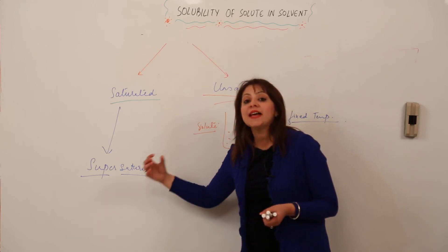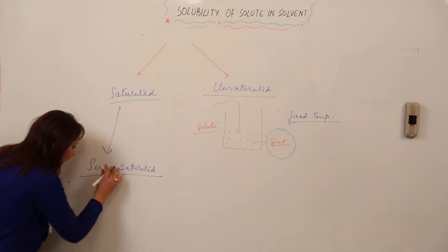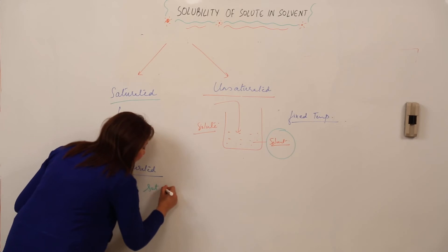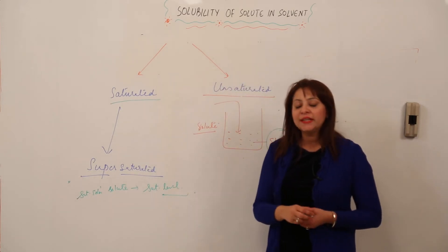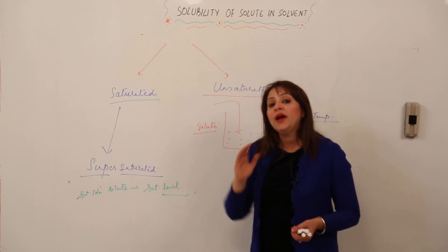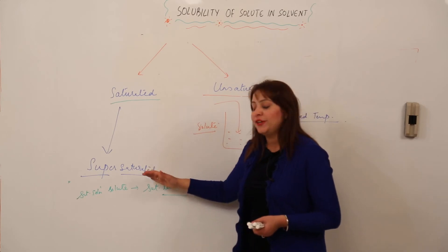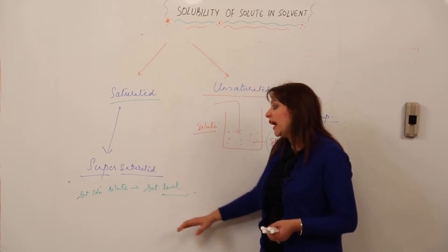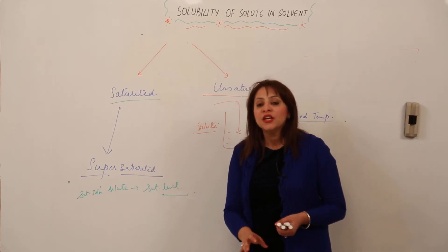Supersaturated solution has the power of saturation but still has extra parts — that is why it is called supersaturated. Supersaturated solution is a saturated solution that can dissolve solute more than its saturation level. We add solute to a solvent, it dissolves, reaches saturation — a point where it will not dissolve more solute — but a supersaturated solution dissolves beyond that ability. That is called the supersaturated solution.